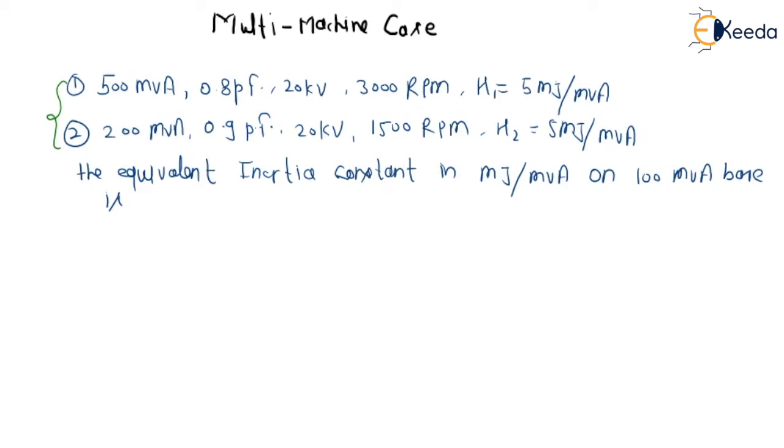The equivalent inertia constant in megajoule per MVA on 100 MVA base is what we need to find. H1 is equal to 5 megajoule per MVA and G1 is equal to 500 MVA. H2 is equal to 5 megajoule per MVA and G2 is equal to 200 MVA. So what is the question